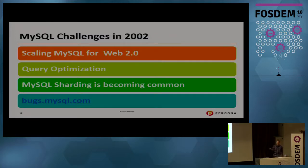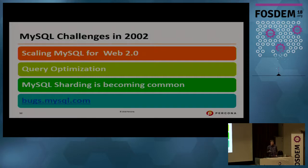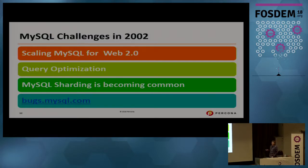A lot of Web 2.0 was based on MySQL. If you look back at companies founded in the early 2000s and look at open source databases, MySQL was by far the majority — it may not have been the only game in town, but it was close. The focus was on query optimization as well as working with many larger companies implementing sharding.